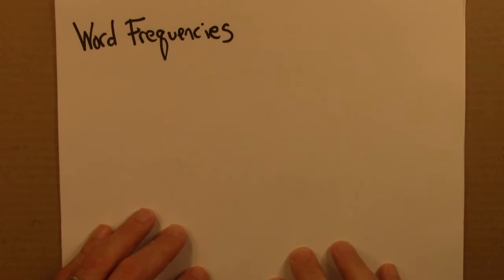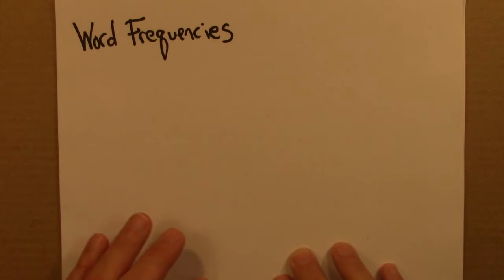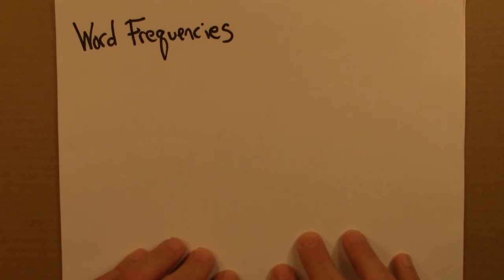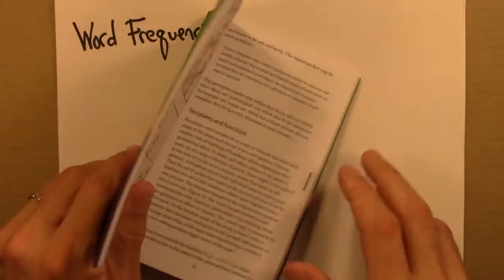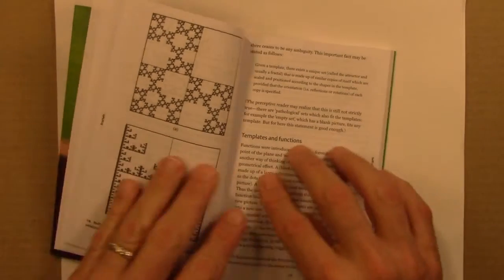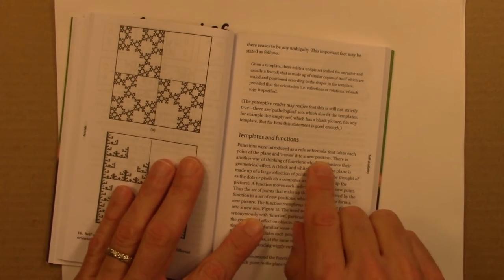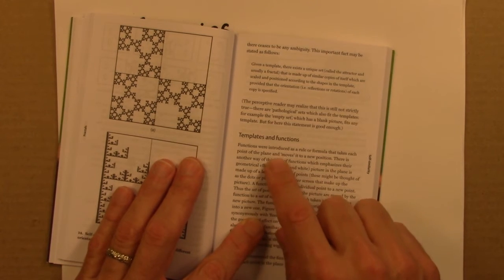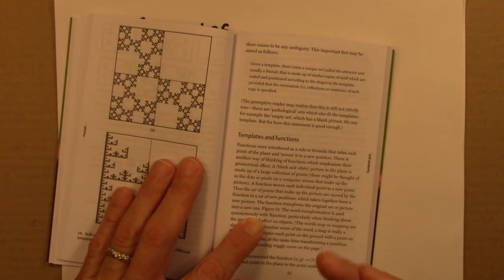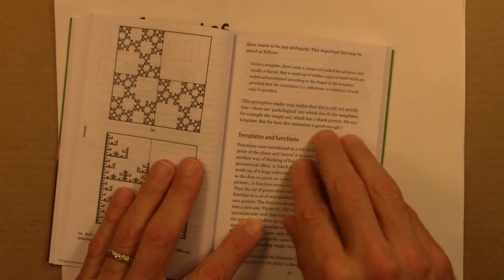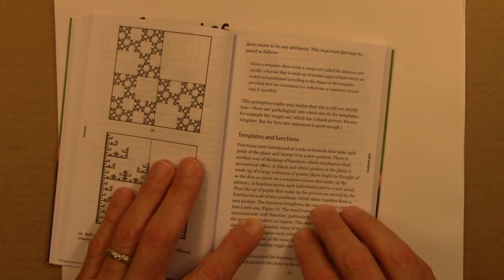So now instead of considering the masses of books, we're going to consider something much more interesting and subtle and I think surprising: the frequencies of words inside of books. So here's a book and different words appear in it — words like 'were' and 'moves' and 'position' and so on. Some of these words are very common and appear quite frequently, and other words are much rarer. So what would the distribution of these frequencies look like?